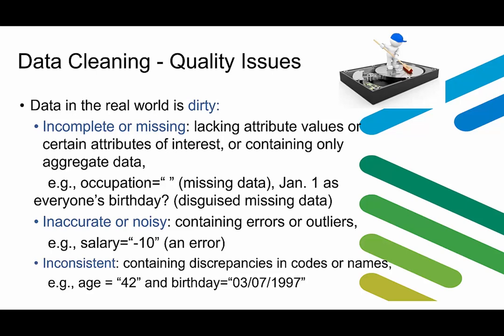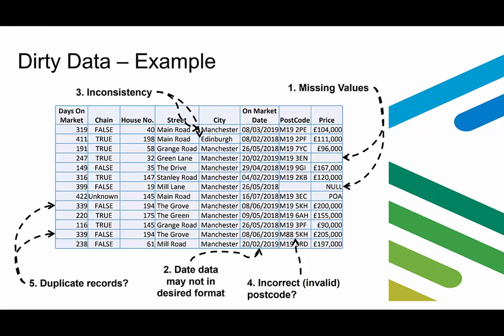Data can also be inaccurate or noisy, meaning it contains errors or outliers — for example, salary recorded as a negative value. It can also be inconsistent, when data contains discrepancies in codes or names — for example, when age is 42 but the birthday indicates the entity was born in 1997. Here is an example of a very dirty dataset.